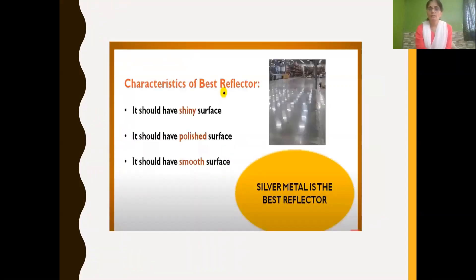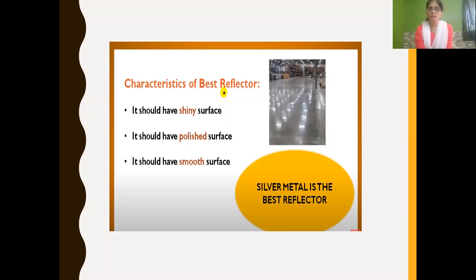Which objects reflect light? Objects should have a shiny, polished, or smooth surface. For example, silver metal is the best reflector. When plain glass is coated with silver on one side, it makes the glass into a plain mirror, because silver metal is the best reflector.